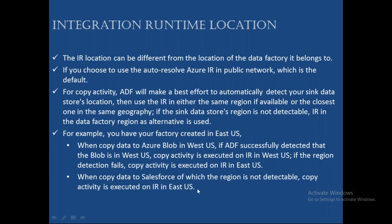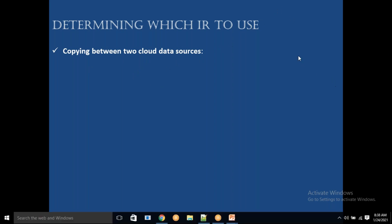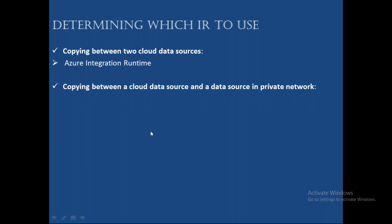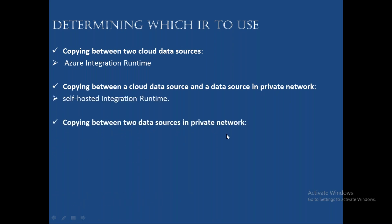Determining which IR to use: when copying between two cloud data stores, you use Azure IR. For external transformation activity — to dispatch a job, submit it to Spark — use Azure integration runtime. When copying between a cloud data store and a data source in a private network, you would use self-hosted IR.